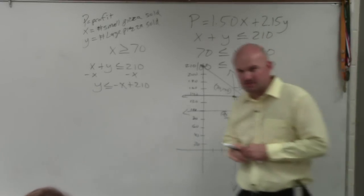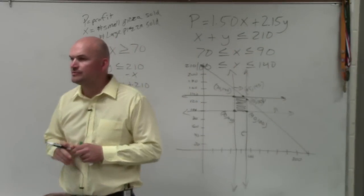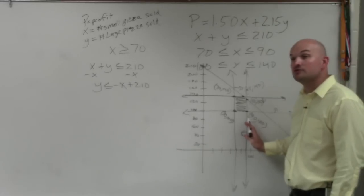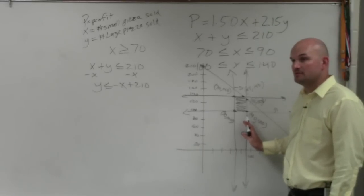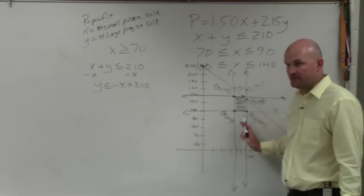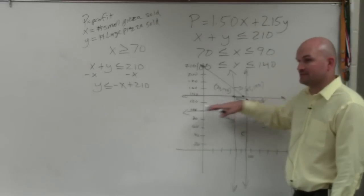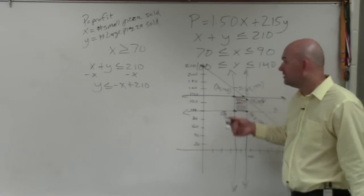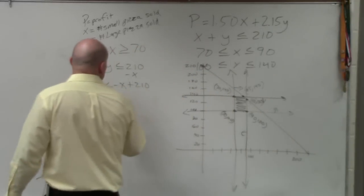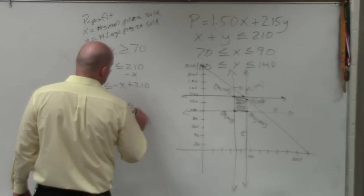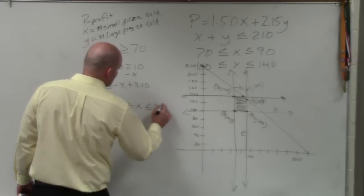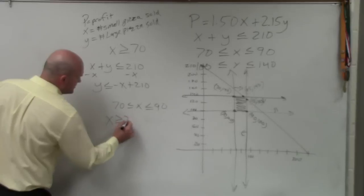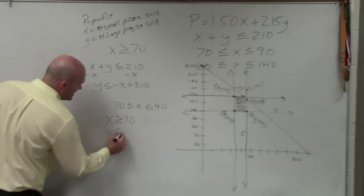No? Where did I lose you? Do you understand how I graph these vertical lines? Do you? You can say no. I'll re-explain it. Do you understand how I graph the horizontal lines? You can say no. It's okay. So, you have 70 is less than or equal to x, which is less than or equal to 90. That's the same thing as saying x has to be greater than or equal to 70 and x has to be less than or equal to 90.